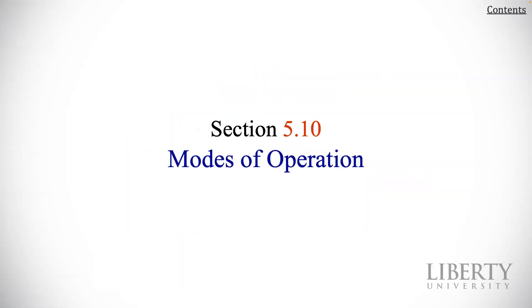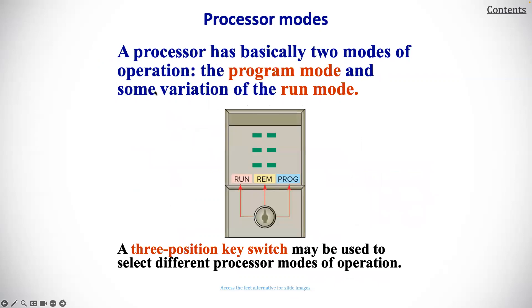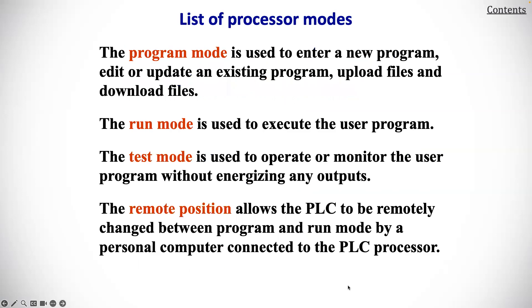Let's talk about modes of operation. A processor has basically two modes of operation: the program mode, and then some variation of the run mode. A three-position key switch may be used to select different processor modes — program mode, run mode, test mode, and remote position. The remote position indicates that the PLC can be controlled by another PLC.